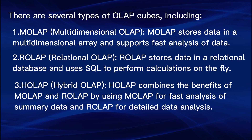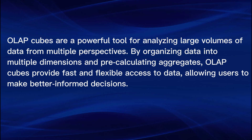There are several types of OLAP Cubes, including: 1. MOLAP (Multidimensional OLAP) — stores data in a multi-dimensional array and supports fast analysis of data. 2. ROLAP (Relational OLAP) — stores data in a relational database and uses SQL to perform calculations on the fly. 3. HOLAP (Hybrid OLAP) — combines the benefits of MOLAP and ROLAP by using MOLAP for fast analysis of summary data and ROLAP for detailed data analysis. OLAP Cubes are a powerful tool for analyzing large volumes of data from multiple perspectives, providing fast and flexible access to data and allowing users to make better informed decisions.